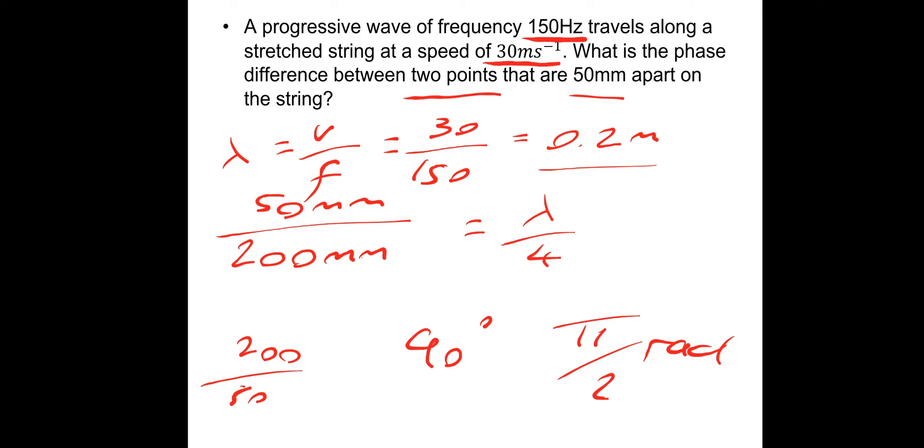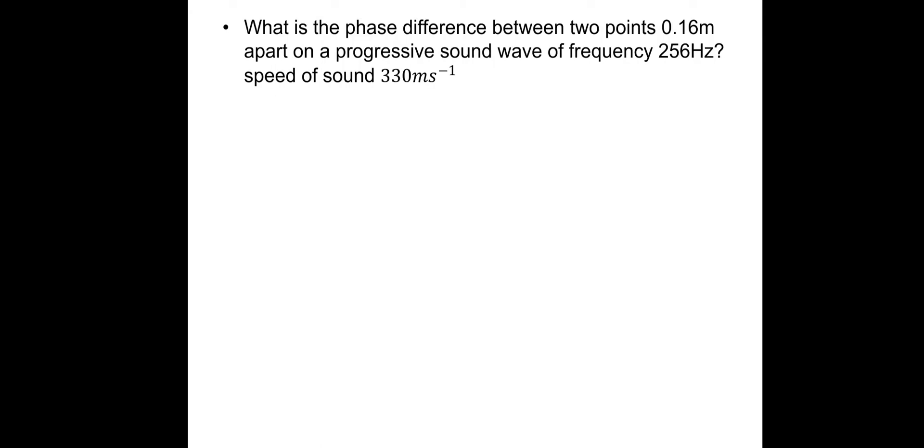So those two are the phase difference: 90 degrees or π/2 radians. I would advise to always go with radians if you can, unless it's asked for in degrees. Let's have a look at the next one.